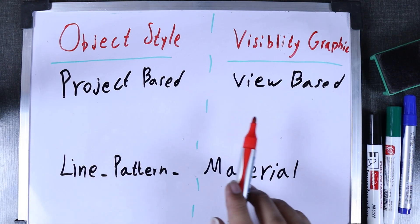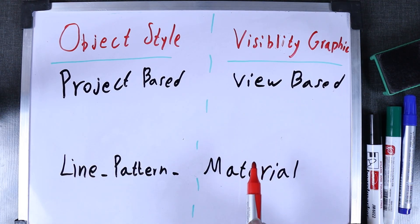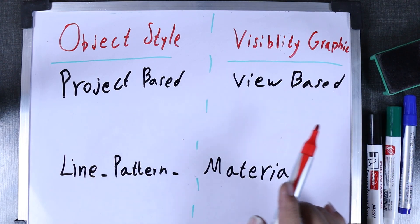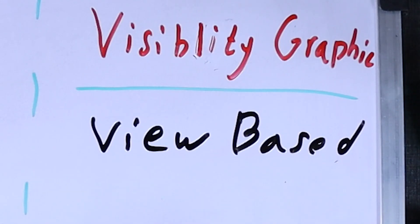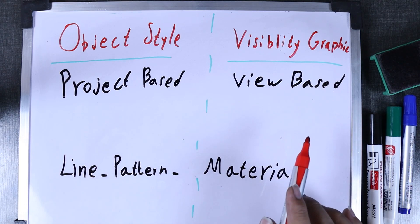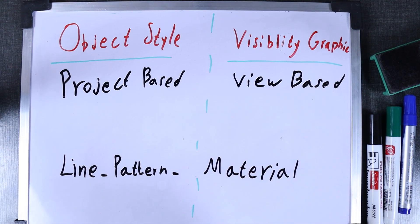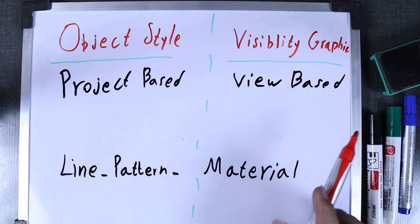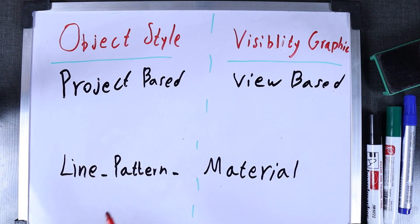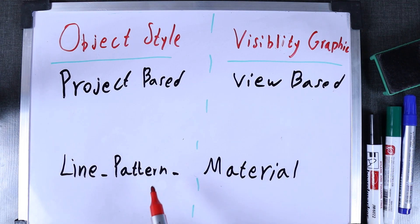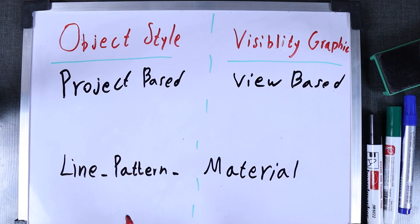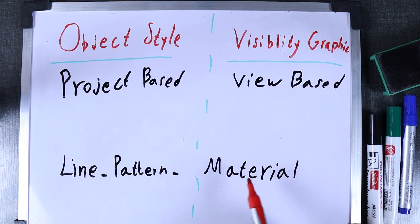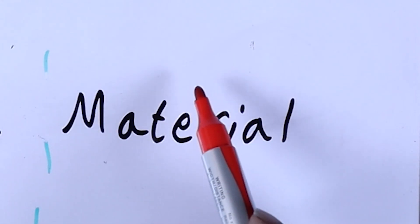After learning Object Style, it's time to learn about Visibility Graphics, or VG. In VG, when you change something it is view-based — you're only changing the active view you're in. In Visibility Graphics you can change the line pattern and some other graphical settings on each category, and you can also hide and unhide them very easily. Note that you cannot change the default material in Visibility Graphics —